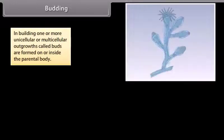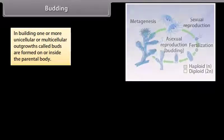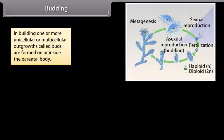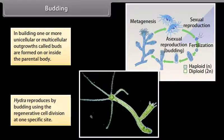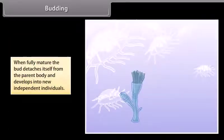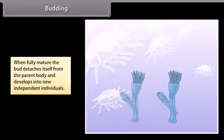Budding: In budding, one or more unicellular or multicellular outgrowths called buds are formed on or inside the parental body. Hydra reproduces by budding using regenerative cell division at one specific site. When fully mature, the bud detaches itself from the parent body and develops into a new independent individual.